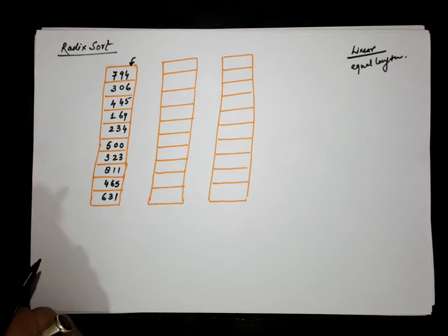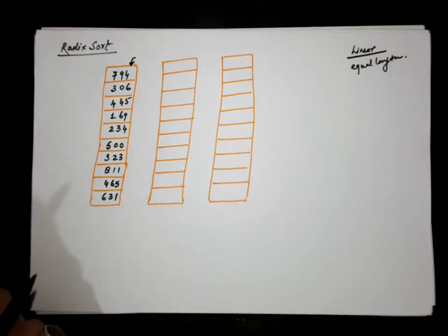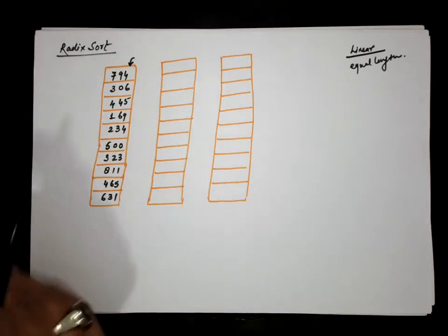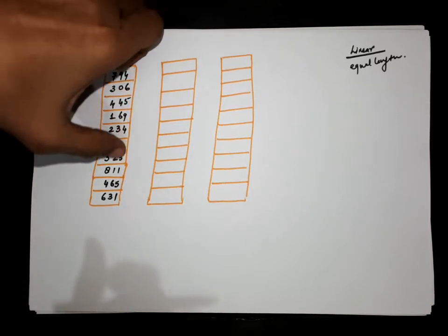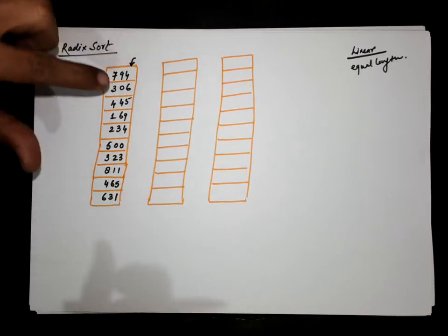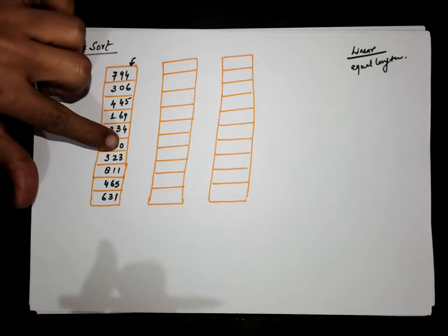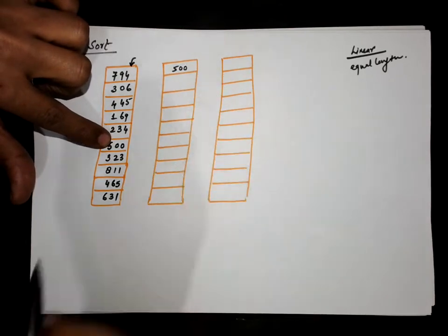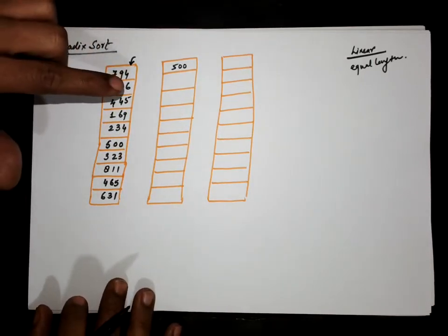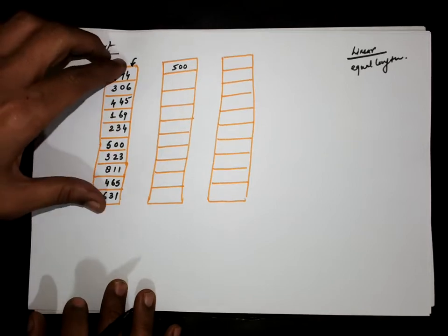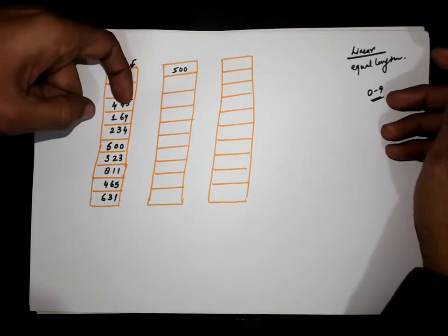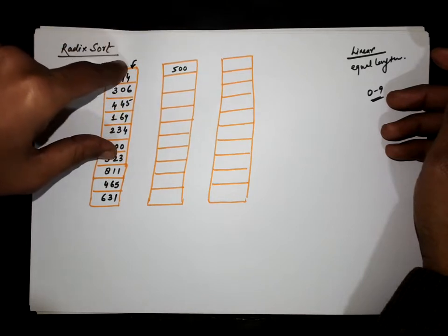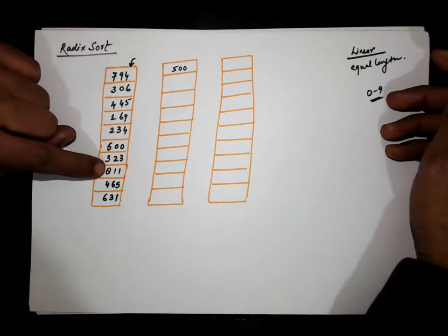In Radix Sort, we sort the numbers according to the last radix, meaning the ones position, then the tens radix, then the hundreds radix. So first we do the sorting according to the ones position digit. We are actually doing Counting Sort here. In Counting Sort the range of numbers is small — here the range will be zero to nine, since we are sorting according to the digit at the ones position.